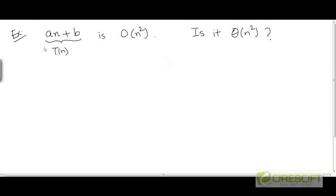Let's consider a generic linear function of n. Suppose t equals an plus b, where a and b are constants, and we are assuming that a is a positive constant. Now, can we prove that an plus b is O(n²)?